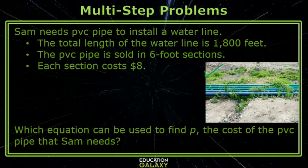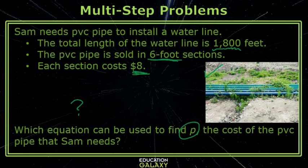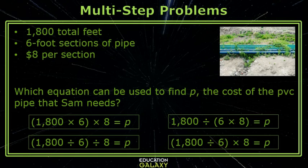Let's try another one. Sam needs PVC pipe to install a waterline. The total length of the waterline is 1,800 feet. The PVC pipe is sold in 6-foot sections and each section costs $8. Which equation can be used to find P, the cost of the PVC pipe that Sam needs? Let's visualize this problem. I have 1,800 feet that I need and I'm cutting them